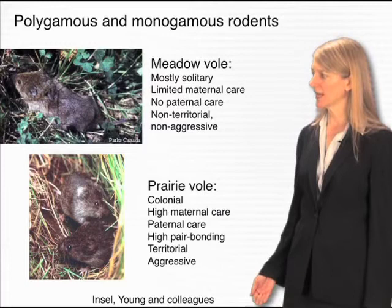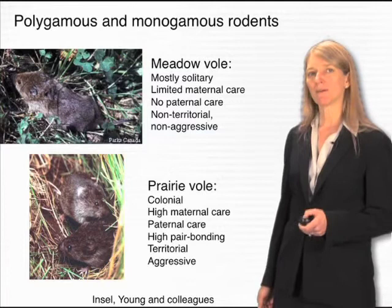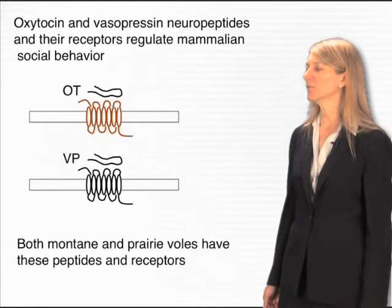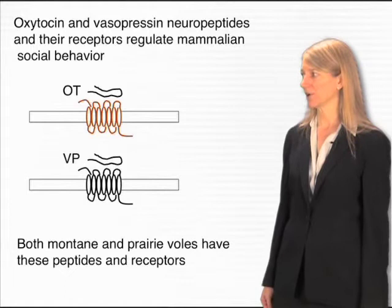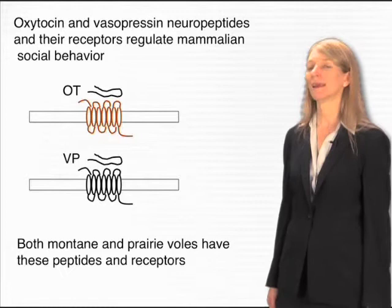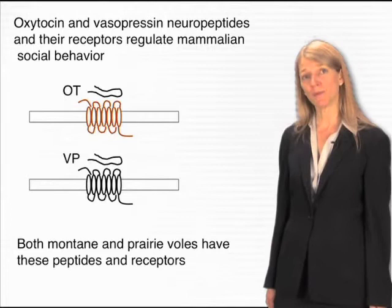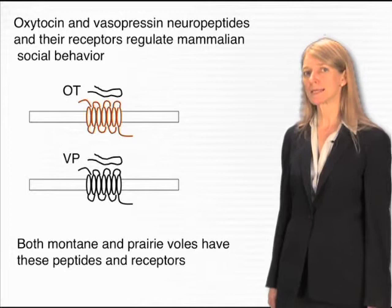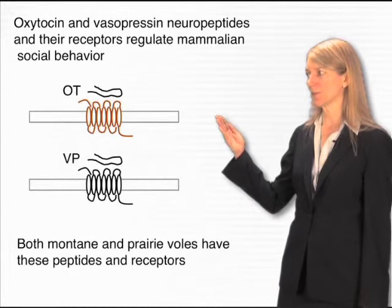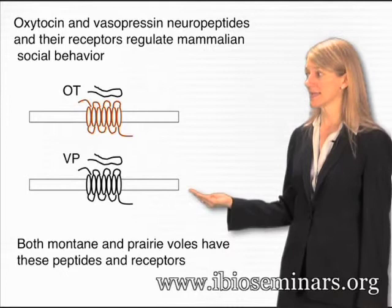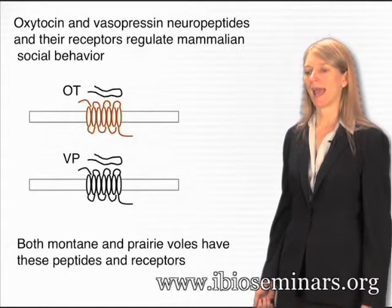That has been the mission of Tom Insel, Larry Young, and their colleagues at Emory University. What they found is that these differences in social behaviors were related to the functions of important neuropeptides in the mammalian brain. In mammals, social behavior is regulated by two related neuropeptides called oxytocin and vasopressin. Oxytocin is strongly implicated in maternal behaviors as well as maternal physiology like nursing, while vasopressin is related to male behaviors. Each of these peptides exists in the brain and has its own specialized receptors.